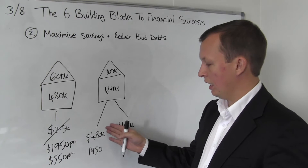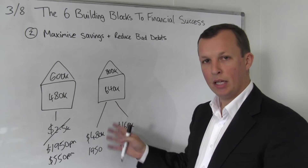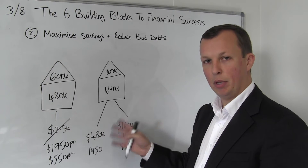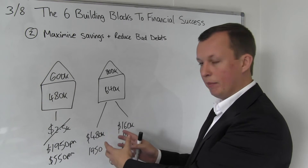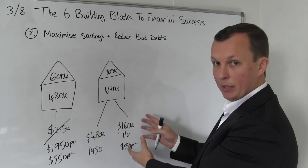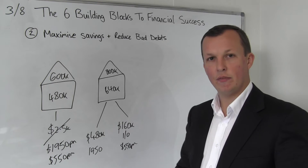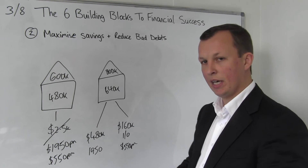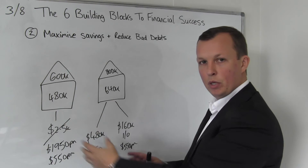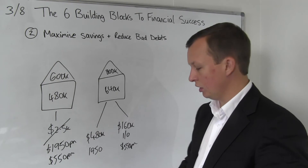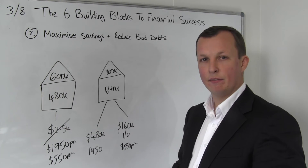We've got that existing loan which is partly interest only, partly principal and interest — restructured to free up the cash. We've now been able to get an additional loan of $160K. Our total monthly commitments haven't changed from where we were originally, but now we can take that $160K and invest.